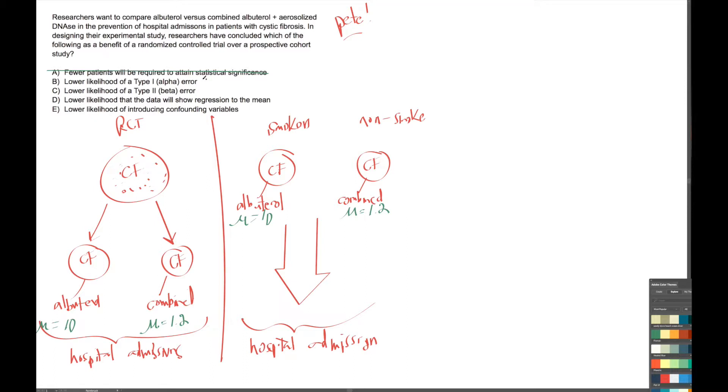Alright guys, now let's look at the next answer choices. We're going to group the alpha error and beta error together and consider them in combination. In order to consider these, we have to understand what they are, so let's talk about that.